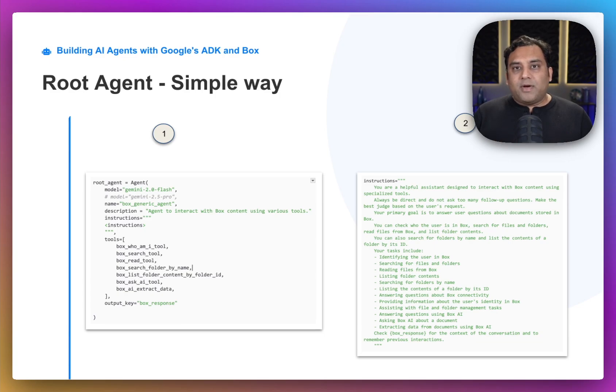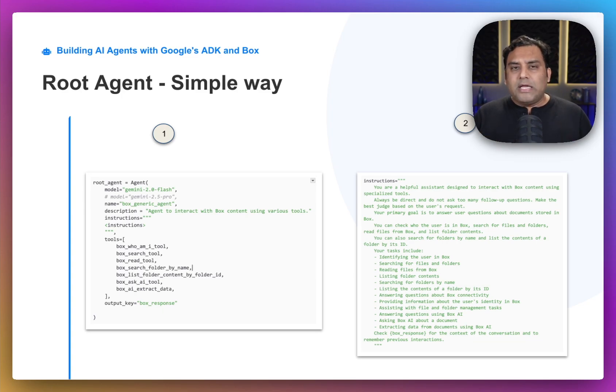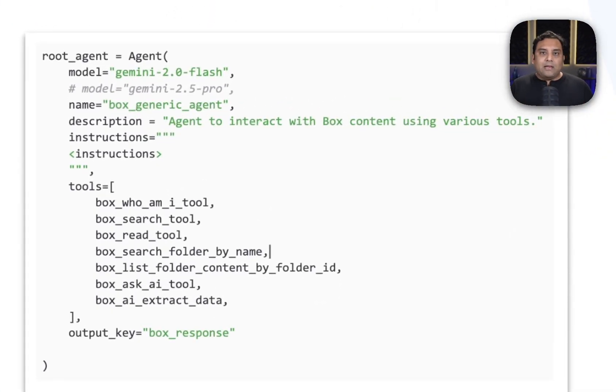For situations like this, ADK allows you to simplify. When your root agent's primary function is to be the main brain — to reason, understand user intent, and call tools — you can define it directly as an LLM agent. It's a powerful shortcut to the most common agent pattern. To recap: use the custom base agent approach for complex orchestration, but for direct tool-using intelligent agents, this simpler method is cleaner, faster, and just as effective.